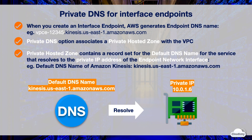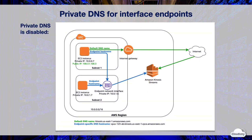If your existing applications make requests to an AWS service using the default DNS name, they can continue to make requests through the interface endpoint without requiring any configuration changes. In this diagram, you have a public subnet one and private subnet two. There is an interface endpoint for Amazon Kinesis Data Streams and an endpoint network interface in subnet two. When the private DNS for the interface endpoint is disabled, instances in either subnet can send requests to Kinesis through the interface endpoint using an endpoint-specific DNS hostname.